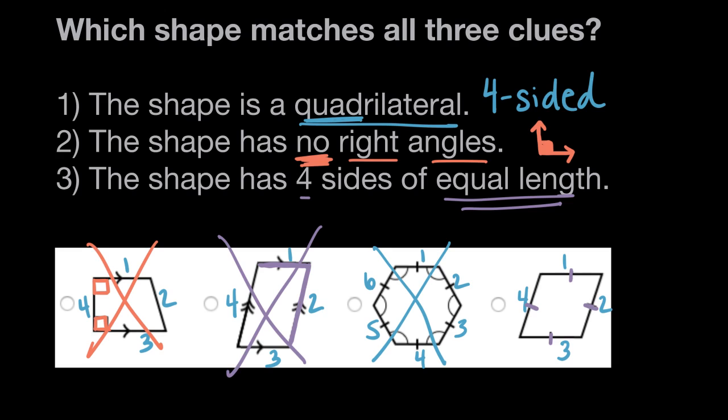So shape four matches all three clues. It is a quadrilateral. There are no right angles, and it has four sides of equal length. So shape four is our answer.